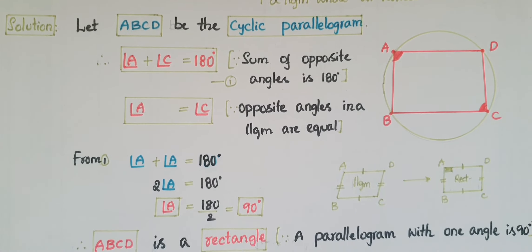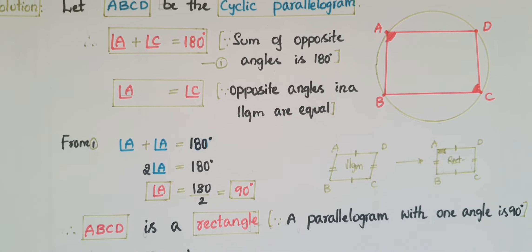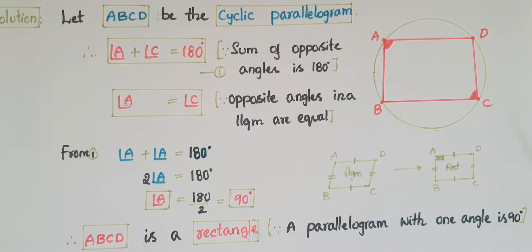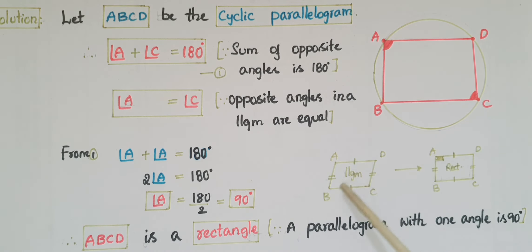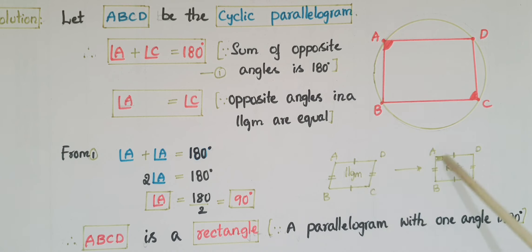If a parallelogram has one angle equal to 90 degrees, then it is called a rectangle. So here ABCD is a rectangle. You can see from this figure this is a parallelogram in which one angle is 90 degrees, so it becomes a rectangle, because in both a parallelogram and a rectangle, opposite sides are equal.